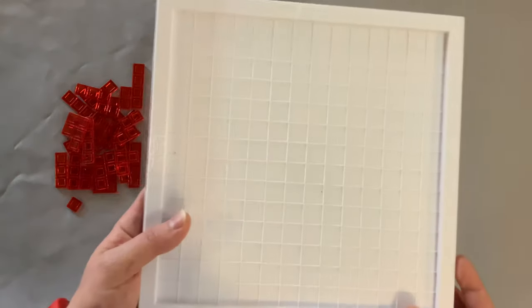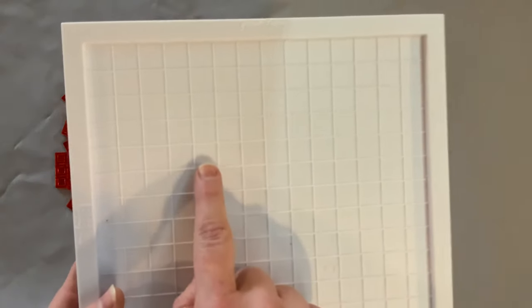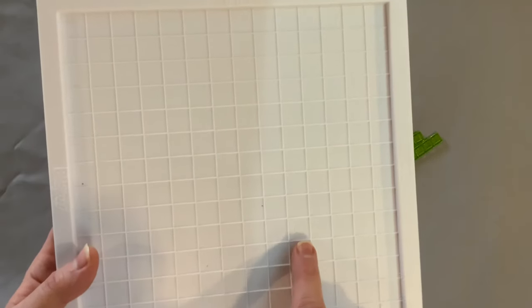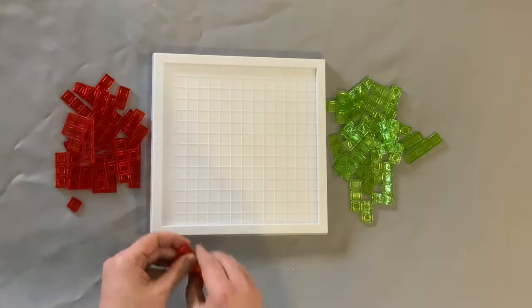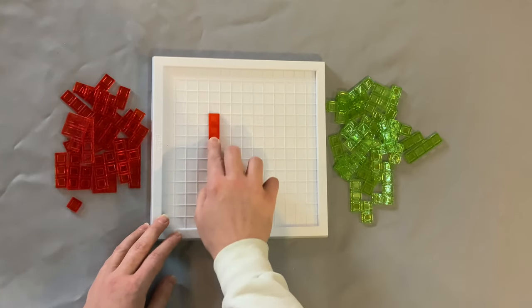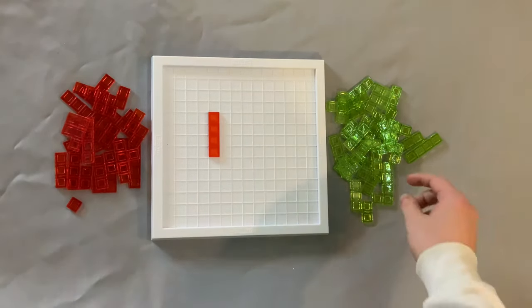Now they're kind of hard to see but they're these little circles right there and right there. So the first player will pretend it's red and they can just place this piece right here and fit it in there so it fits nice and snug.